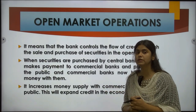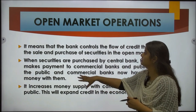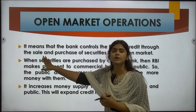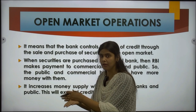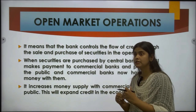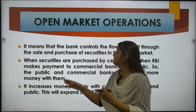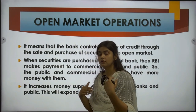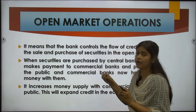Next is open market operations. The central bank controls the flow of credit through the sale and purchase of securities in the open market. When it sells securities, the public and commercial banks purchase them and the amount with them is transferred to the bank, reducing the purchasing power of the public and contracting credit. When there is deflation and prices are low, the bank tries to increase the purchasing power of the public by purchasing securities from the open market, providing money into the market and boosting the economy, thereby controlling deflation.